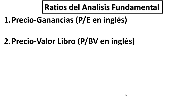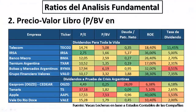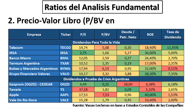Otro índice relevante es el precio-valor libro, que compara el precio actual de la acción con el valor contable de su patrimonio. Números debajo de 1 indican que el precio en el mercado es menor al valor de su patrimonio, representando un indicio de que la acción está subvaluada. En cambio, números superiores a la unidad indican que el mercado paga un precio mayor a lo que reflejan los libros contables. Basándonos en este indicador, las acciones más baratas serían Gazprom y Ternium Argentina.